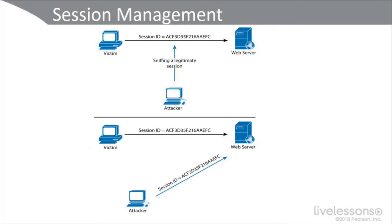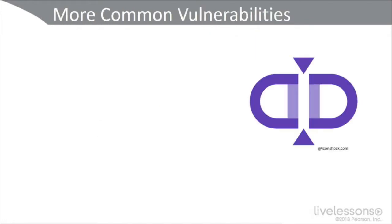HSTS is a recent standard that allows web applications to request that browsers only use encrypted access for them. It is enabled on servers with the strict-transport-security code. Other common vulnerabilities include cookie storage and transmission. Cookies typically don't hold confidential information, but attackers can still use them to develop a well-crafted attack — for example, extracting a user's regular visits to a banking or brokerage site to support a spear phishing or pharming attack.